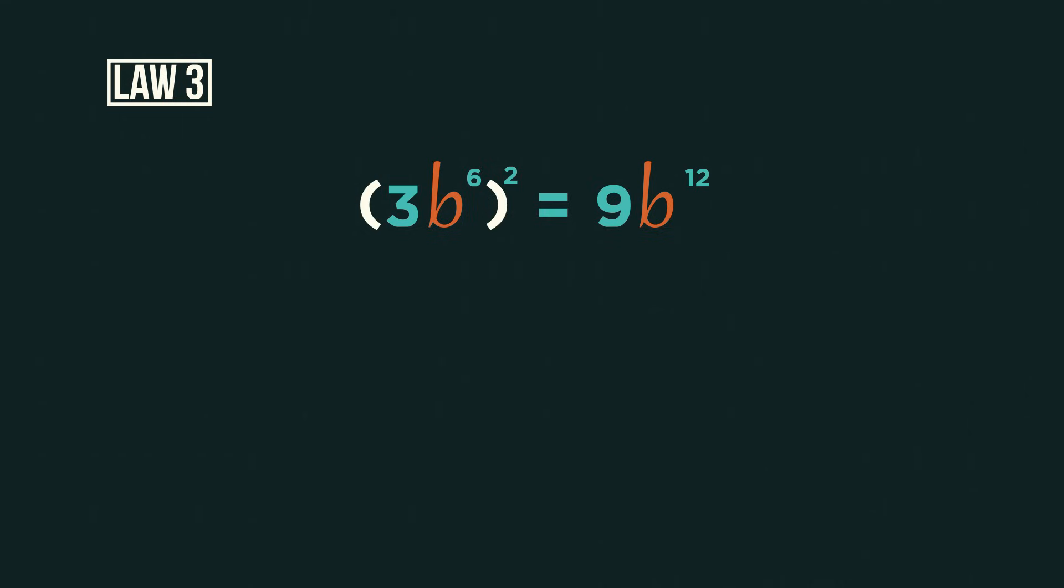If we wrote this out, it would be 3b^6 multiplied by 3b^6. And we know that when we multiply indices, we add the powers. So three multiplied by three is nine and six plus six is twelve. So just remember, when we raise a power to a power, we just multiply the two powers together.